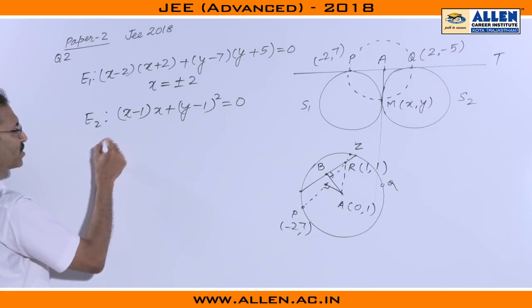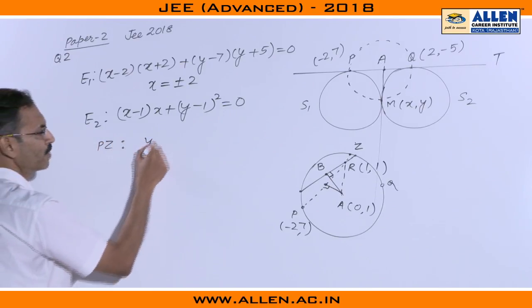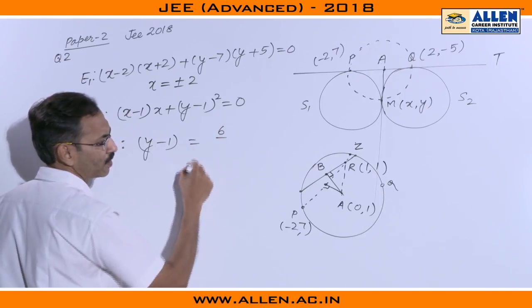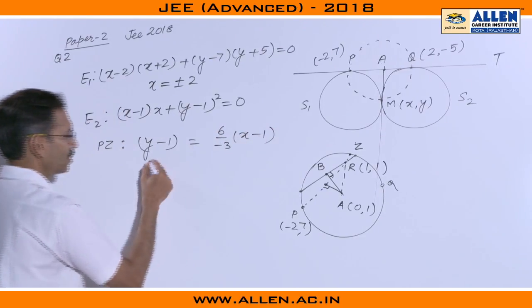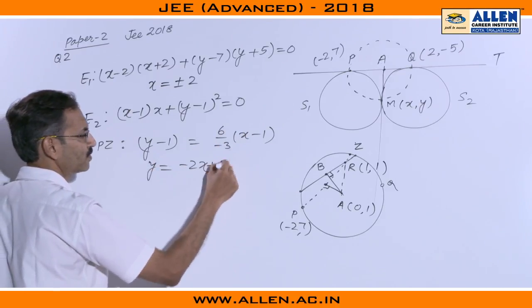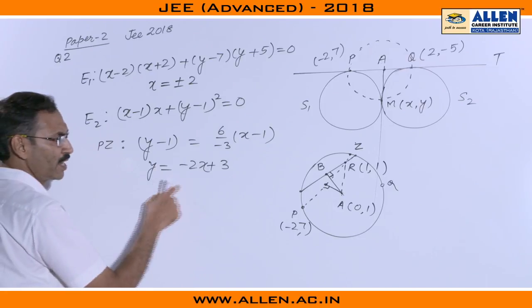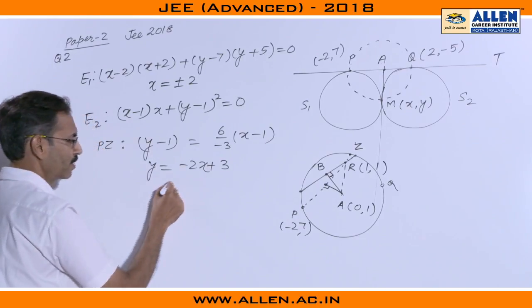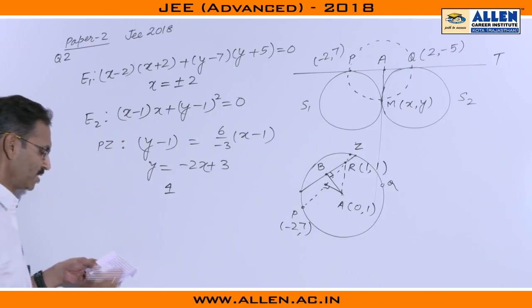The equation of line PZ is y minus 1 equals to 6 over minus 3 x minus 1. It is y equals to minus 2x plus 3. When we calculate the foot of perpendicular from A on this line it comes to be 4 by 5 comma 7 by 5.